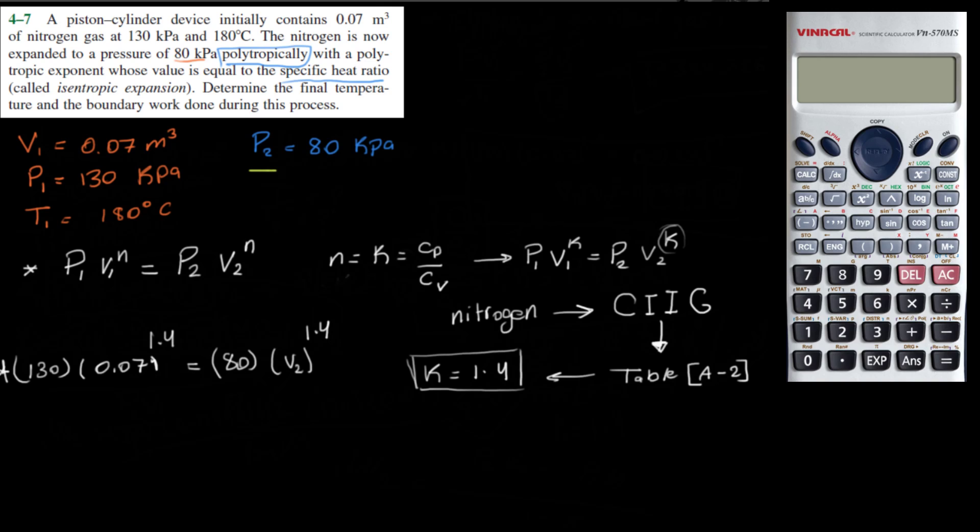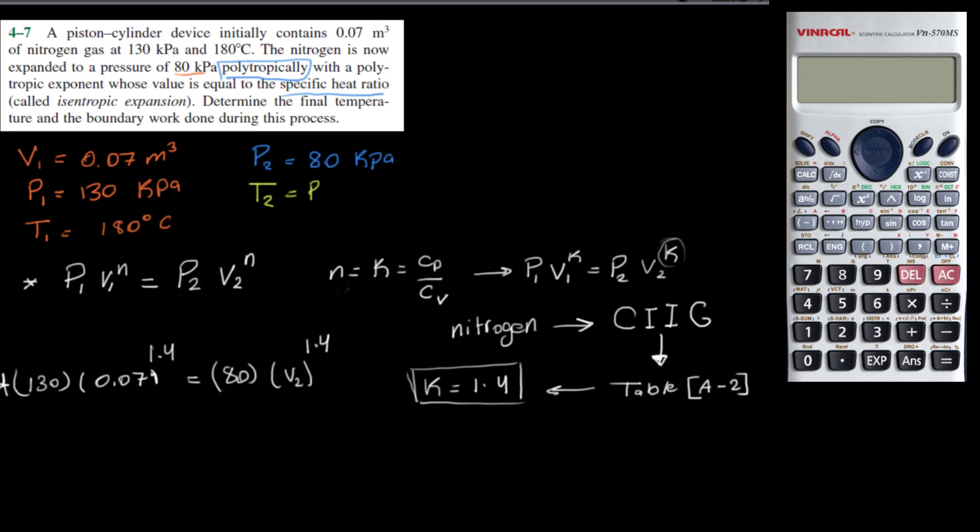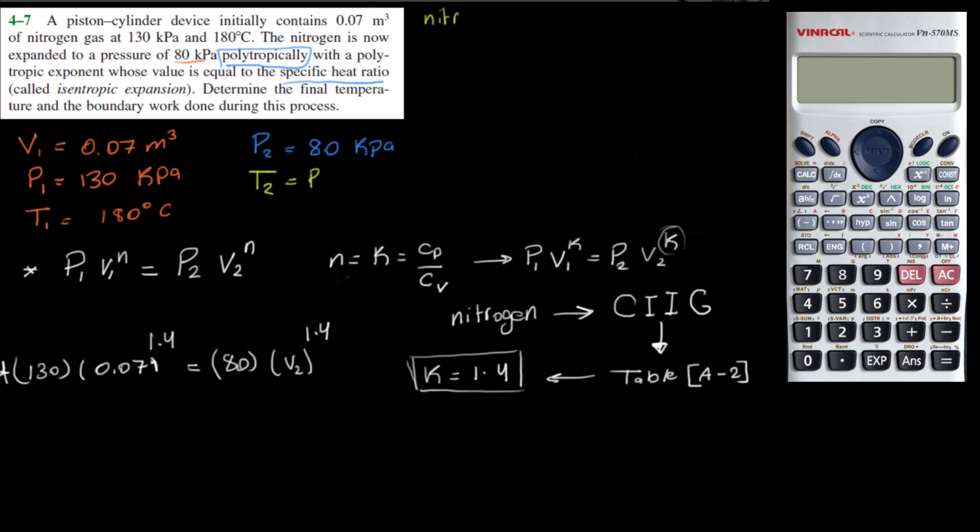Determine the final temperature and the boundary work done during this process. So we need to find T2. And T2 in this case, you have to remember that nitrogen is an ideal gas, so it follows this relationship: P1 V1 over T1 is equal to P2 V2 over T2. Notice we have P1, we have V1, we have T1, we have P2, we don't have V2, and we are asked to find T2. But notice from this equation or this relationship we can obtain the value of V2.